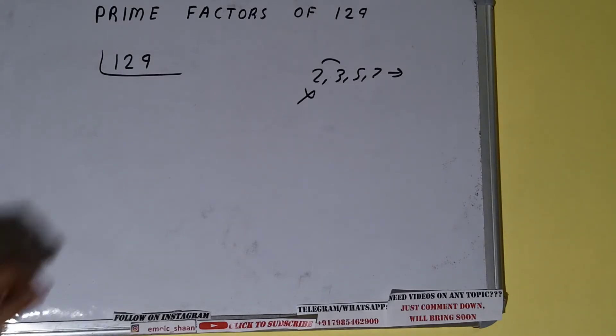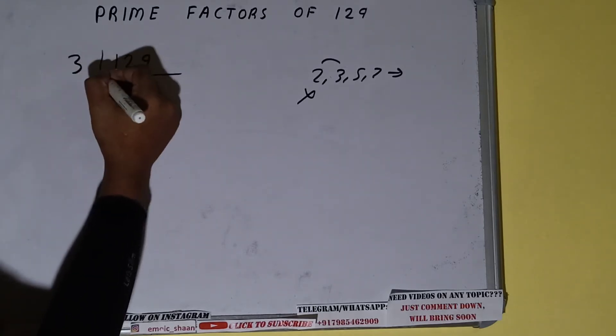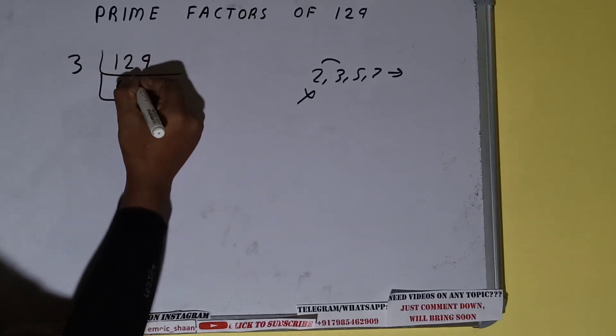Is the number 129 divisible by 3? We need to check: 3 into 12 is 4, 3 into 9 is 3. Yes, it is divisible by 3. So divide it: 3 into 12 is 4, 3 into 9 is 3, we'll be having 43.